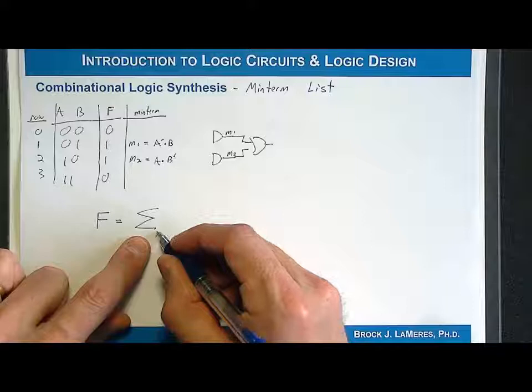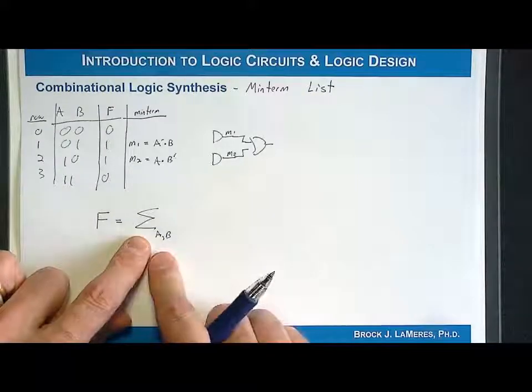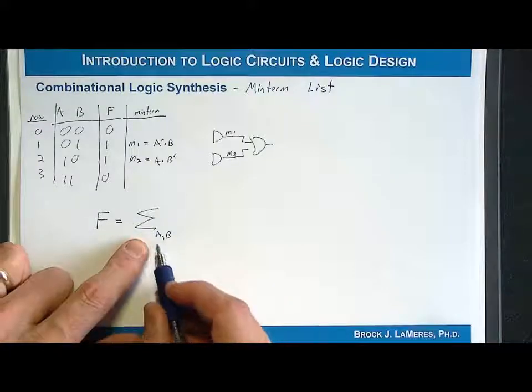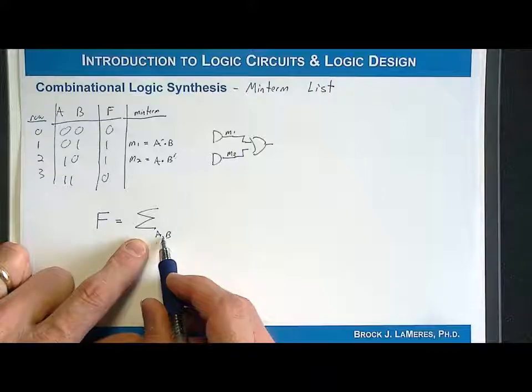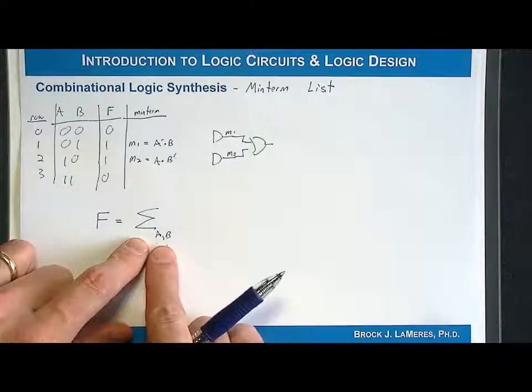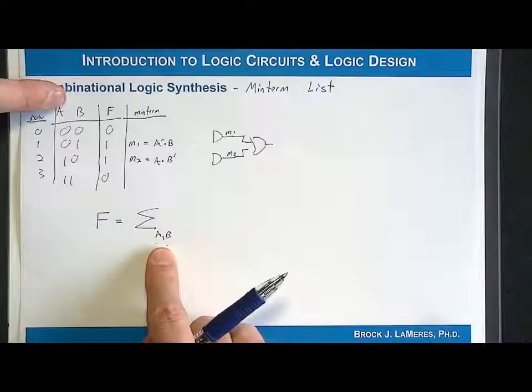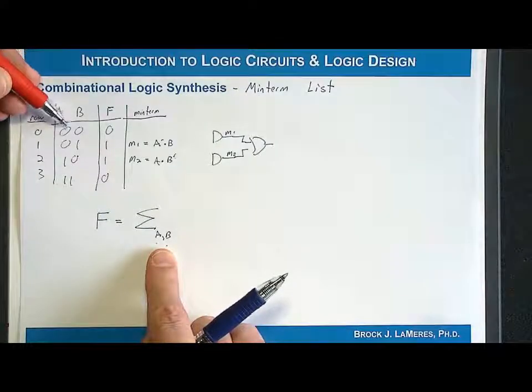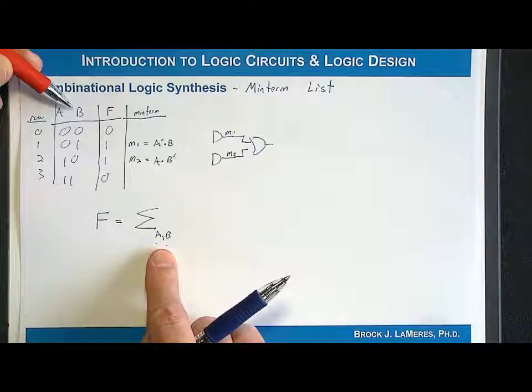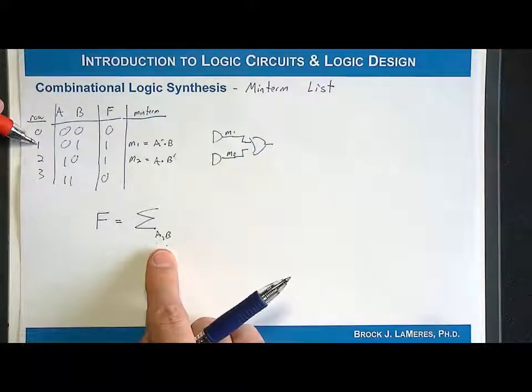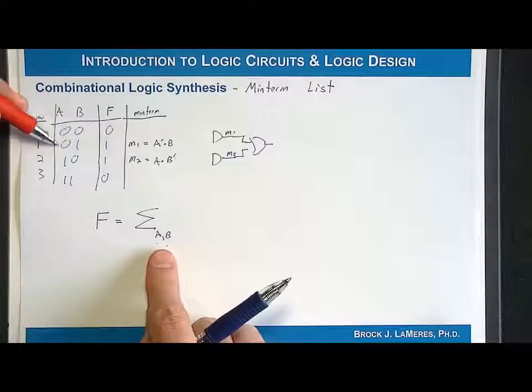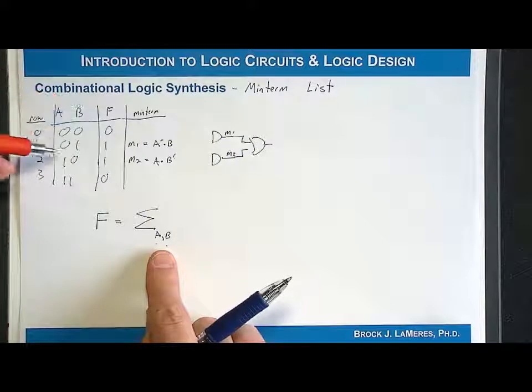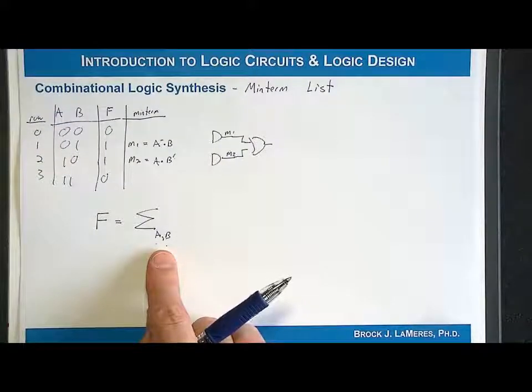For the minterm list, we put as subscripts the input variables comma delimited. Capital sigma says I'm producing a minterm list, and A and B say there's two input variables with A on the left and B on the right. It's important which is on the left and right because it dictates how the row numbers correspond to the actual input codes. You have to keep track which one's on the left and which one's on the right in the truth table.